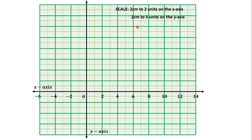On the y-axis, the scale is 2 cm to 5 units. From the origin, the next major grid line is 2 cm, so the next number is 5. Then 10, 15, 20, 25, 30, 35, and 40. You keep increasing by 5 because the scale is 2 cm to 5 units. For the negative downward part, we have negative 5, negative 10, negative 15, and negative 20.